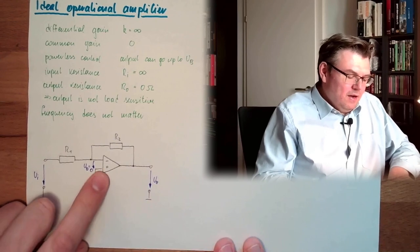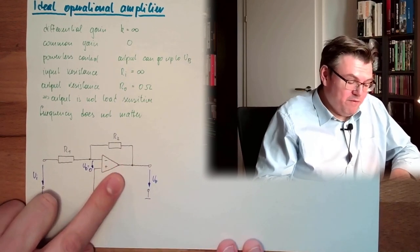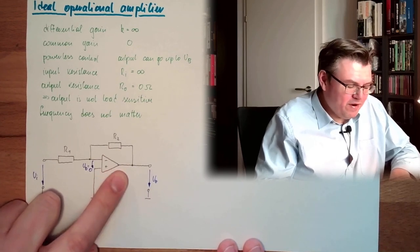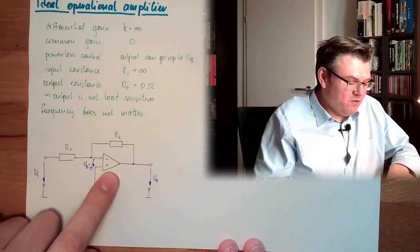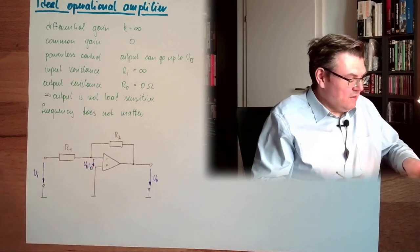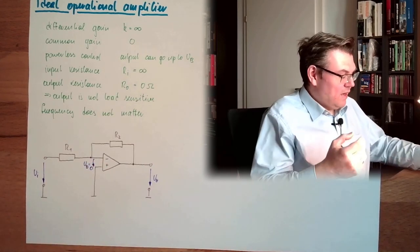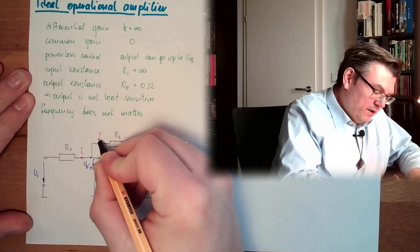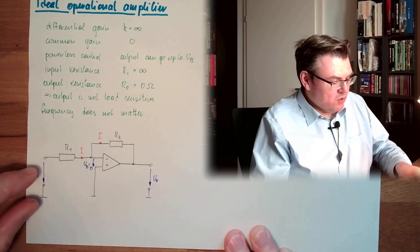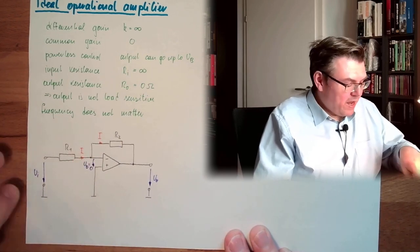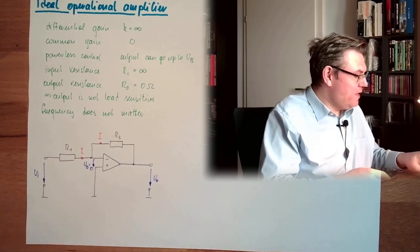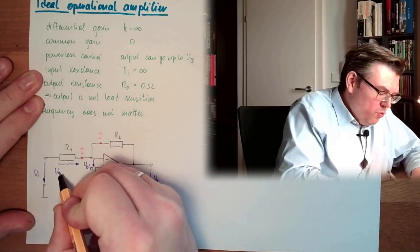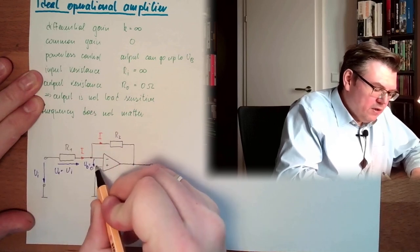So with an ideal operational amplifier, where the output can be loaded and unloaded and whatever, and the output resistance is zero and the input resistance is unlimited, I can say whatever current is running here, this current is running here. And if this is to zero volts, I have here practically U1. This is UI. U1 equals UI because I have here zero.